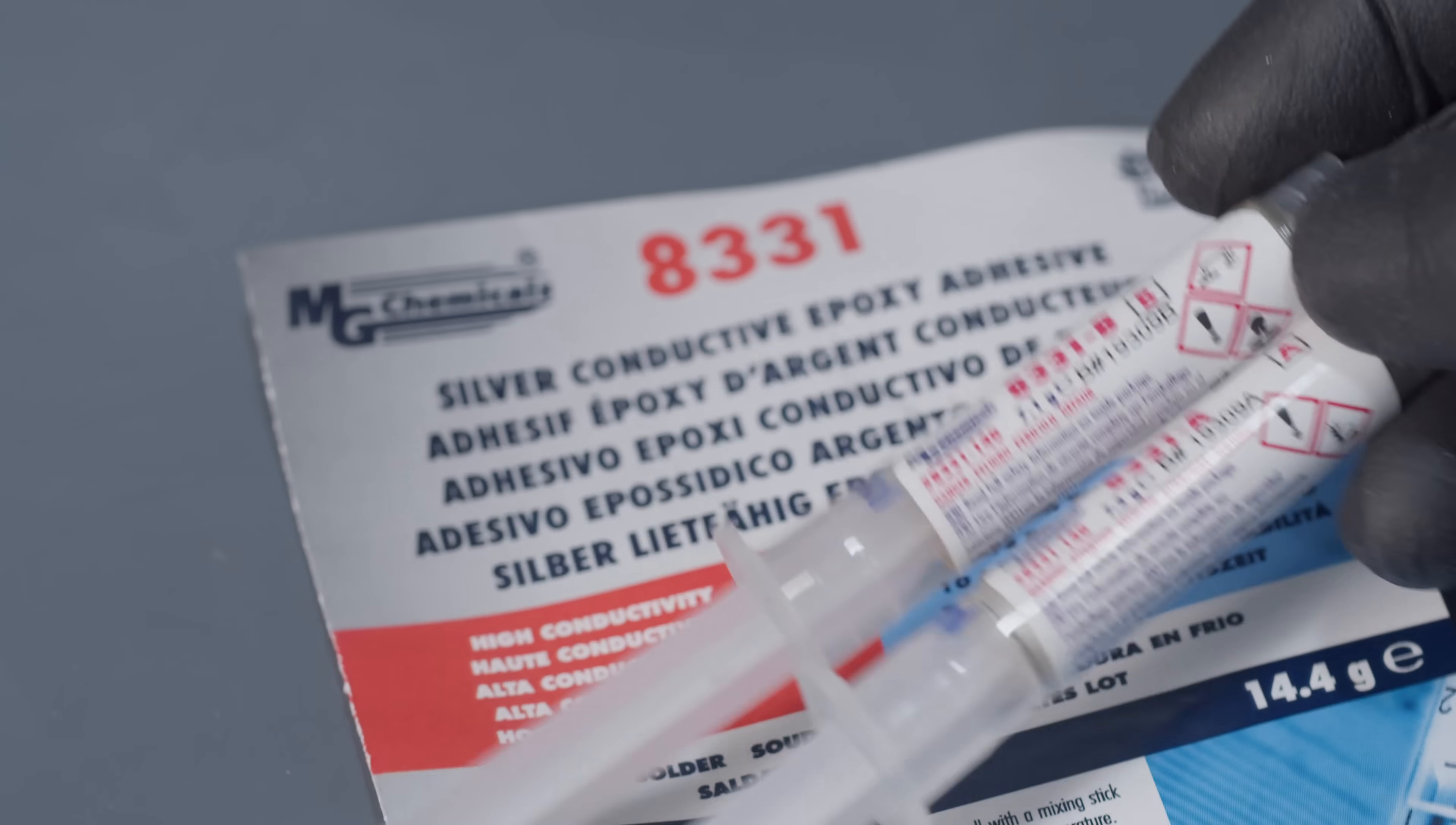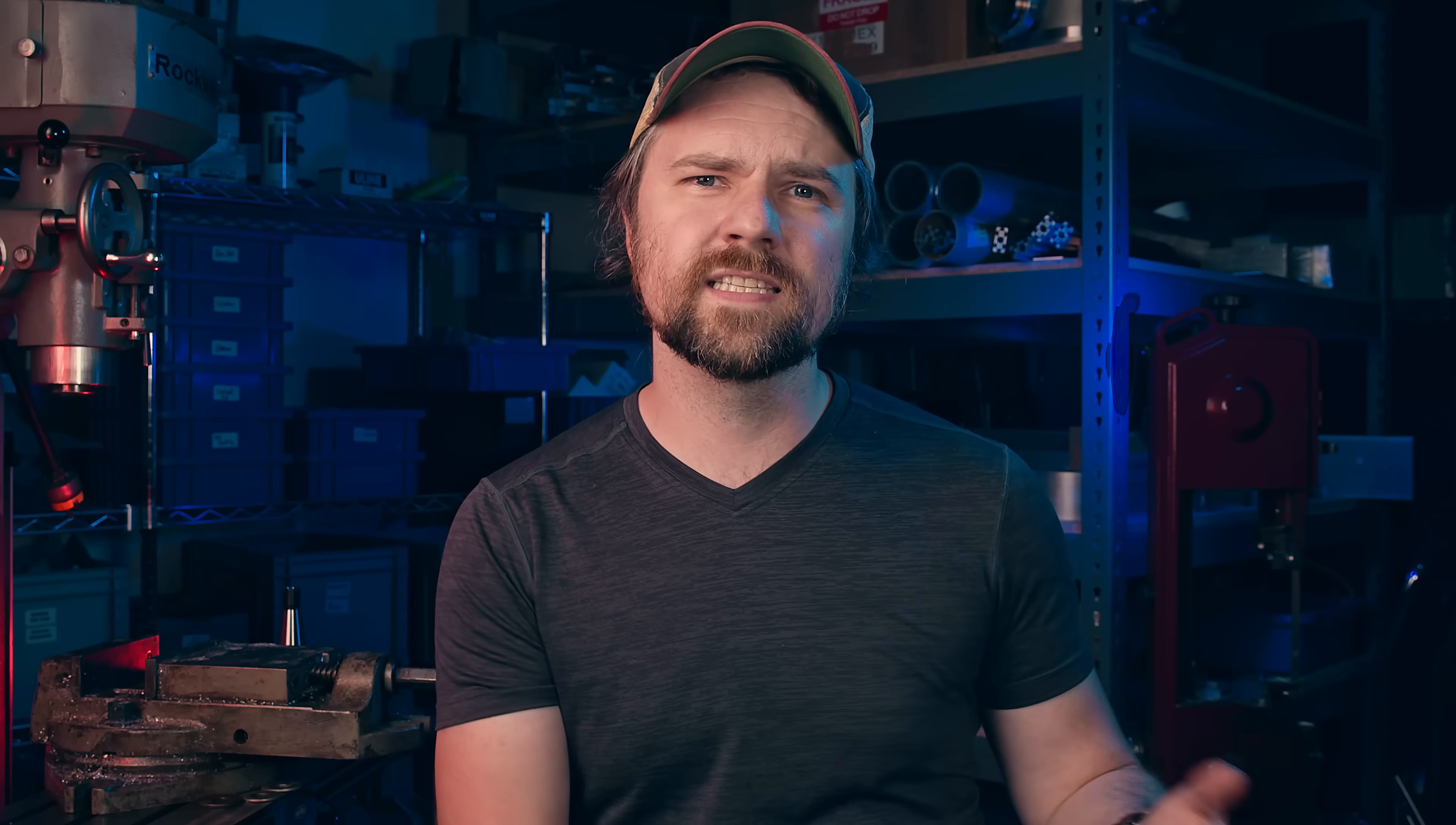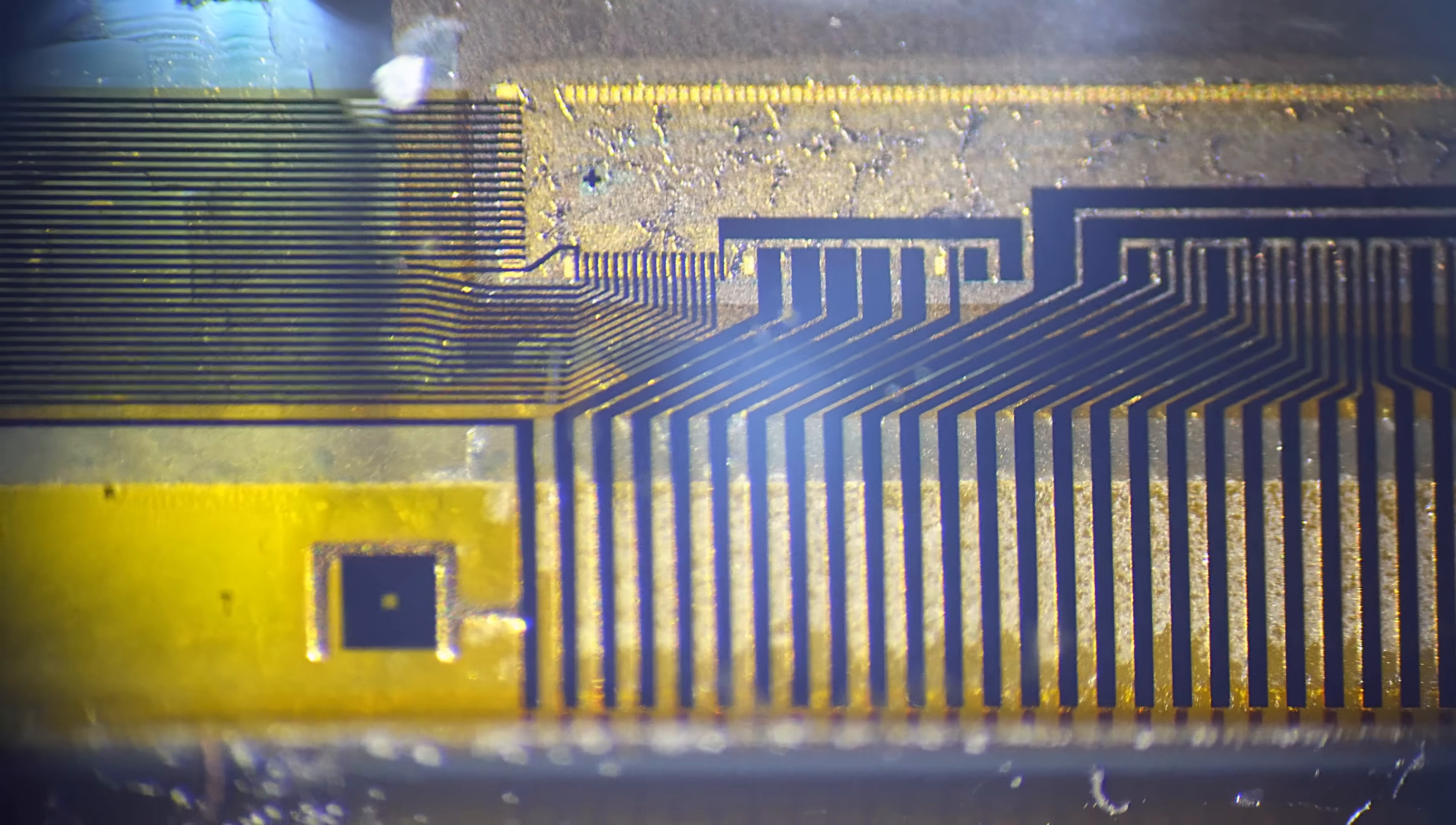You could use something like conductive silver paste or epoxy, but this is tricky because the traces themselves are very narrow and the gaps between them are even smaller. On this cheap, low-resolution LED, for example, the pads on the ribbon cable are just 50 micrometers wide, which is a little smaller than a human hair.